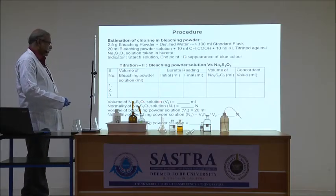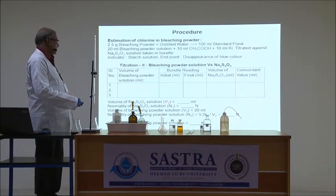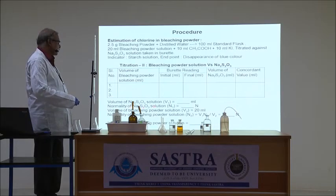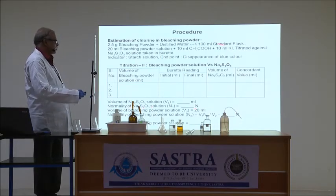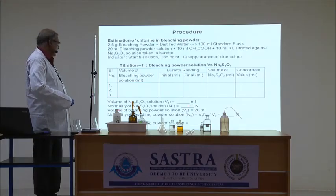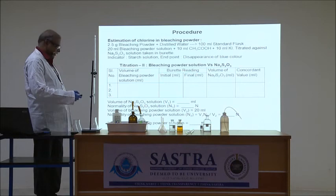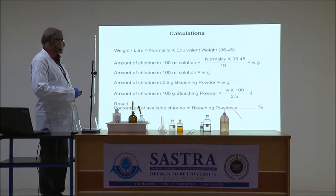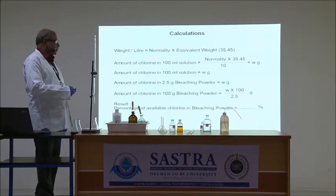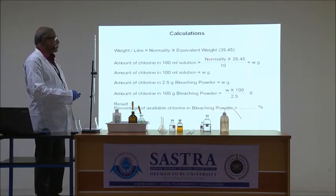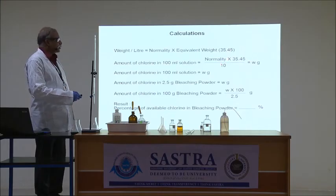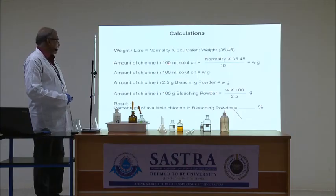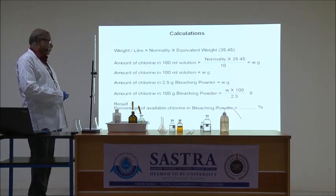The volume of sodium thiosulfate solution is the important value noted. The normality of sodium thiosulfate solution is taken from the previous standardization titration. Using the volume and normality of sodium thiosulfate solution, the normality of the bleaching water solution is calculated. Once the normality of the bleaching water solution is known, the amount of available chlorine can be calculated.